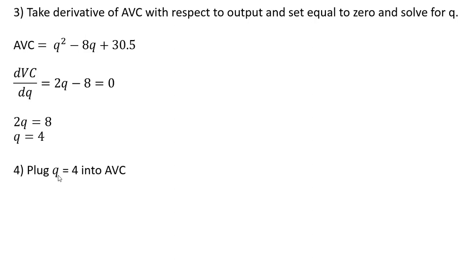The next step is to plug this Q equals 4 into our average variable cost equation up here. So doing that, 4 squared minus 8 times 4 plus 30.5 is $14.50. So at 4 units of output, average variable cost is $14.50.